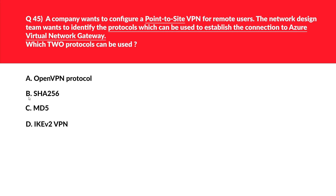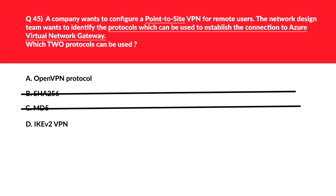Let's look at options B and C together. Option B says SHA-256 and option C says MD5 — Message Digest 5. MD5 and SHA-256 are hashing standards. Hashing standards cannot be used to create an IPSec tunnel; they are used to validate the integrity of data instead. Therefore B and C are definitely incorrect.